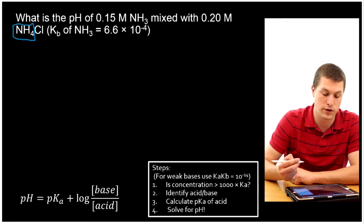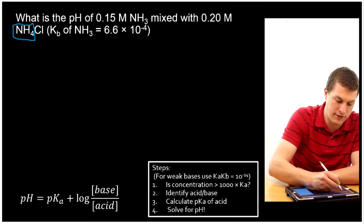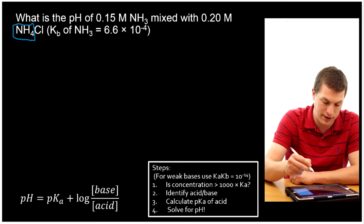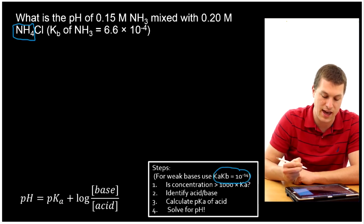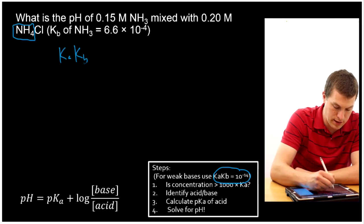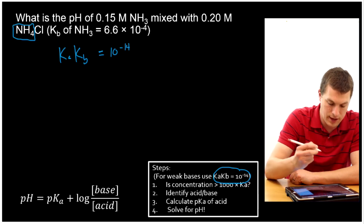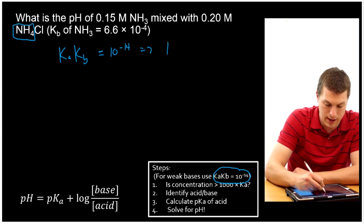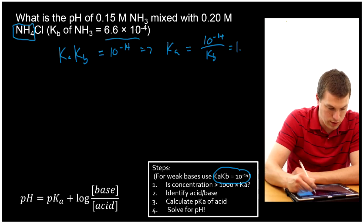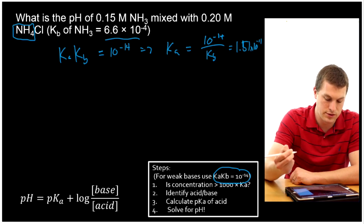So if you start with a base, you first have to calculate Ka. We've been given Kb, but that's no good for us. Our Henderson-Hasselbalch equation has Ka in it. We use this equation which tells us that Ka times Kb is equal to 10 to the minus 14th. That means Ka is equal to 10 to the minus 14th divided by Kb. If I plug in my Kb there, then I will get out 1.51 times 10 to the minus 11th. So that gives me my Ka.